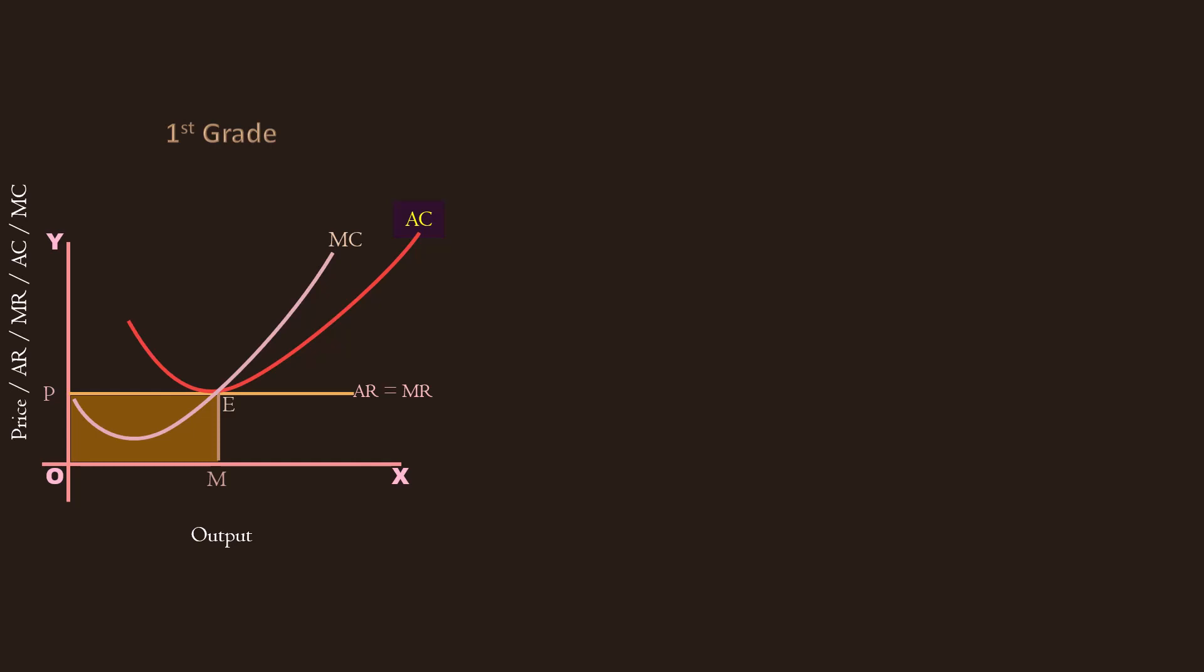The second group of settlers go to the island. Its immediate effect is on demand for corn. The price of corn goes up from P to P1. The first grade land is more intensively cultivated. Its output increases from M units to M1 units. Its cost of cultivation is O T S M1. Its revenue is O P1 E1 M1. It earns a surplus of T P1 E1 S.